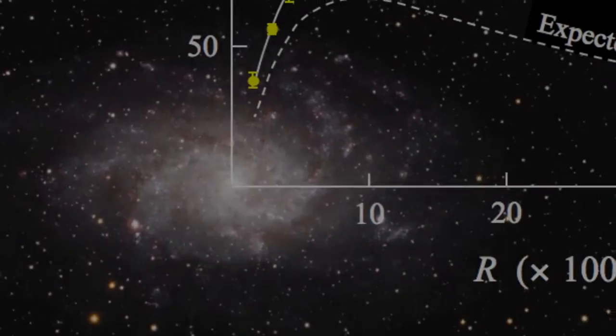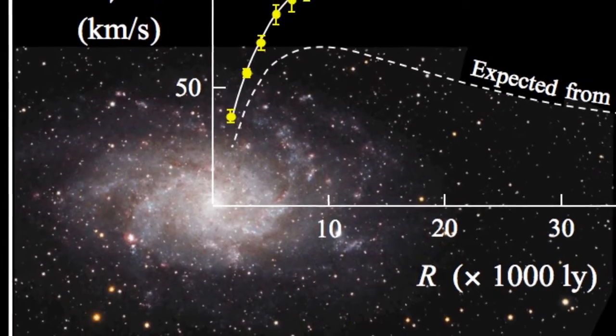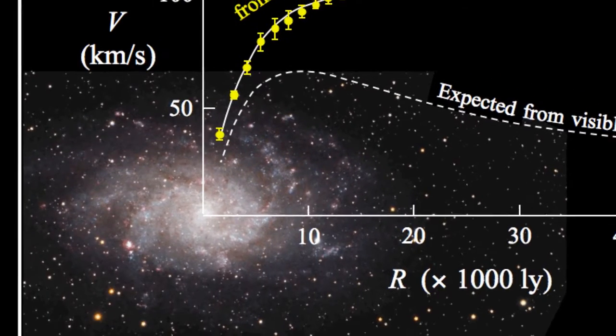One is due to the recessional motion of galaxies across vast distances, the other due to the faster-than-expected rotational speeds of galaxies. To date, both problems are unsolved.